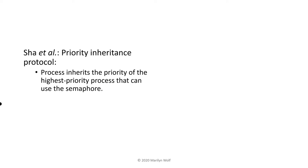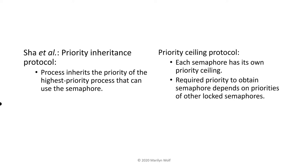Sha and co-authors studied solutions to the priority inversion problem. One approach is the priority inheritance protocol: when a process uses a semaphore, it inherits the priority of the highest priority process that can use that semaphore, but only for the duration of its use of the semaphore. A priority ceiling protocol takes into account the possibility of multiple semaphores — each semaphore has its own priority ceiling, and the priority required to obtain the semaphore depends upon the priorities of other locked semaphores.